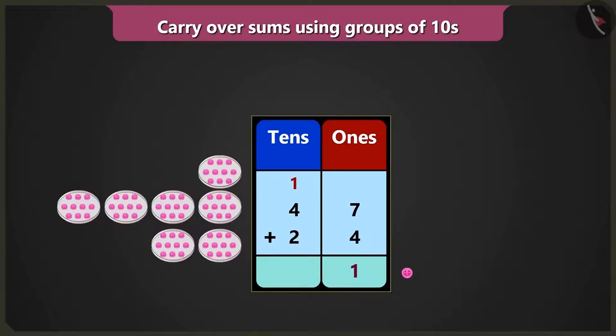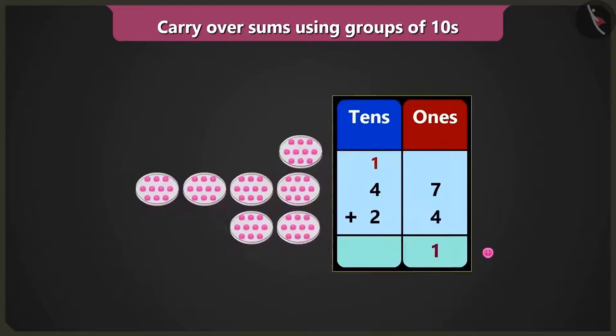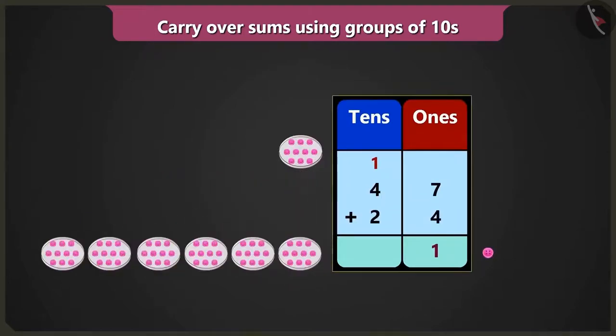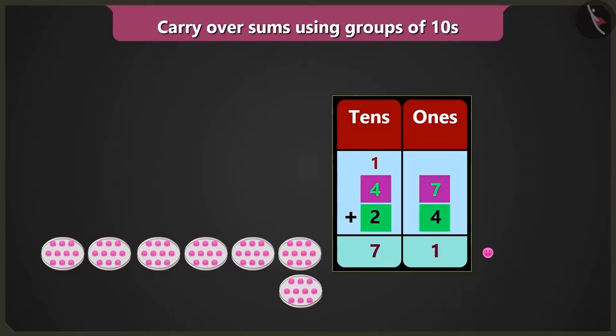Now in the box of tens, 4 tens added to 2 tens will give us 6 tens. Now 6 tens added to the carry over 1 ten will be a total of 7 tens. Yes! So this way, there are a total of 7 tens and 1 one which means there are 71 buttons. So 47 added to 24 will be 71.